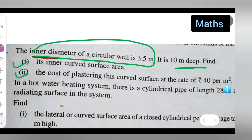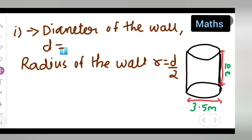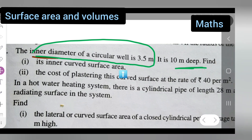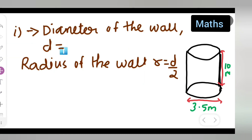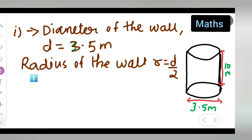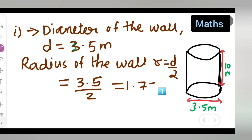Let us start. The diameter of the well is given to be 3.5 meters. The radius of the well is r = d/2, that is 3.5 divided by 2, which gives us 1.75 meters. So your radius r is equal to 1.75 meters.